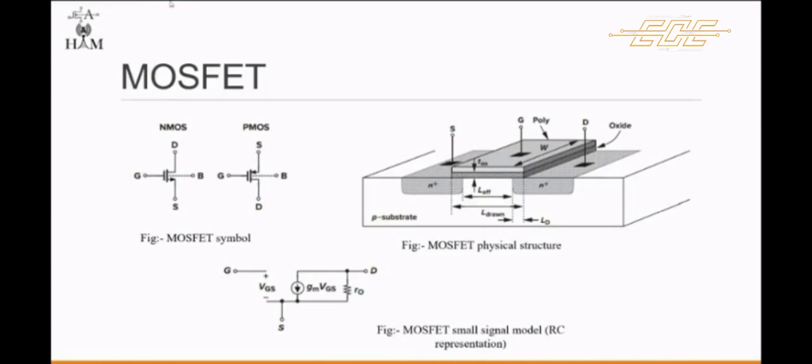MOSFET is generally considered as a transistor and is employed in both analog and digital circuits. The width of the channel is controlled by the voltage of an electrode called the gate, which is located between the source and the drain. It is insulated from the channel near an extremely thin layer of metal oxide.